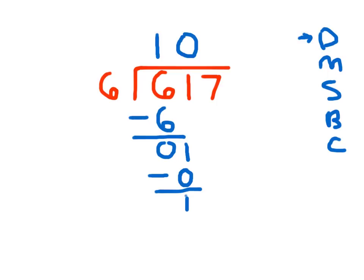At that point, I can go ahead and bring down my 7. 17 divided by 6, I'm familiar with that. That's 2, because 2 times 6 is 12, and 17 minus 12 is 5. 5 is our remainder, so oftentimes students forget to put their remainder up there, and they're not being precise.